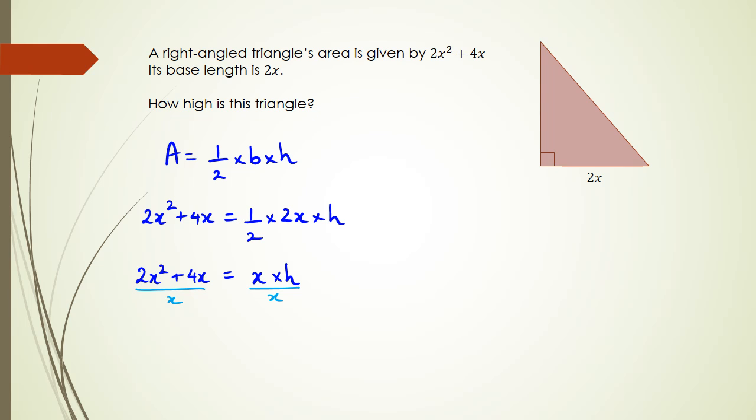When I do this, my two x's on the right hand side cancel out and I only have h left, and I have 2x² + 4x divided by x.